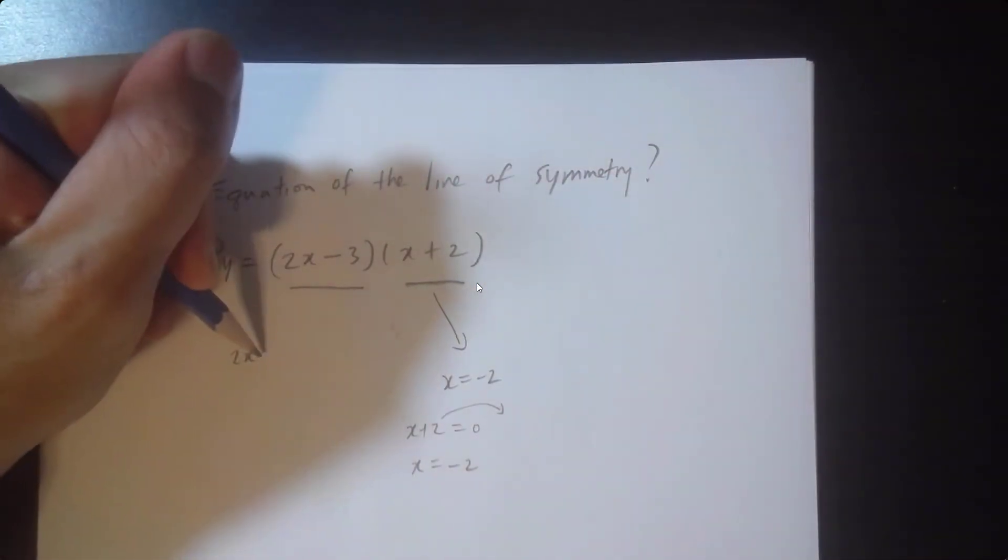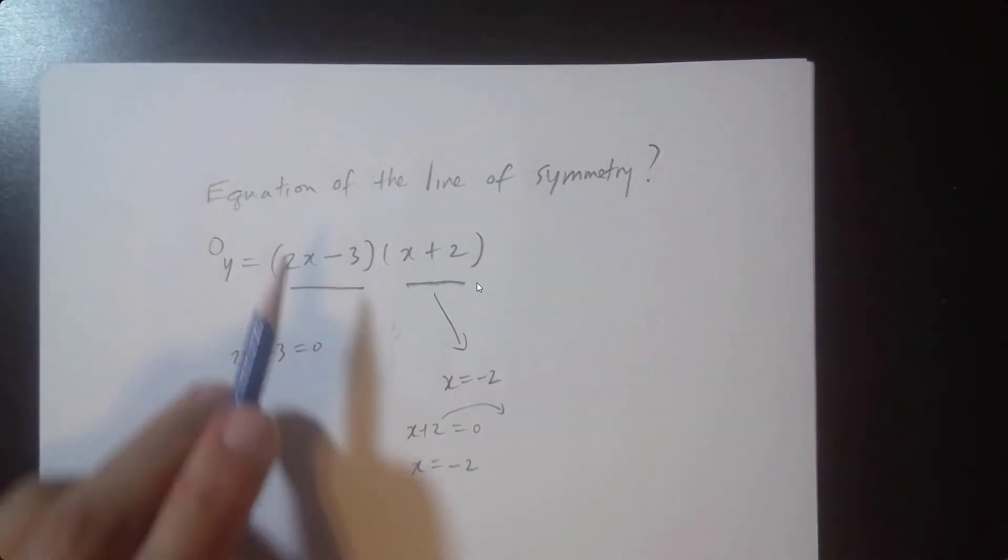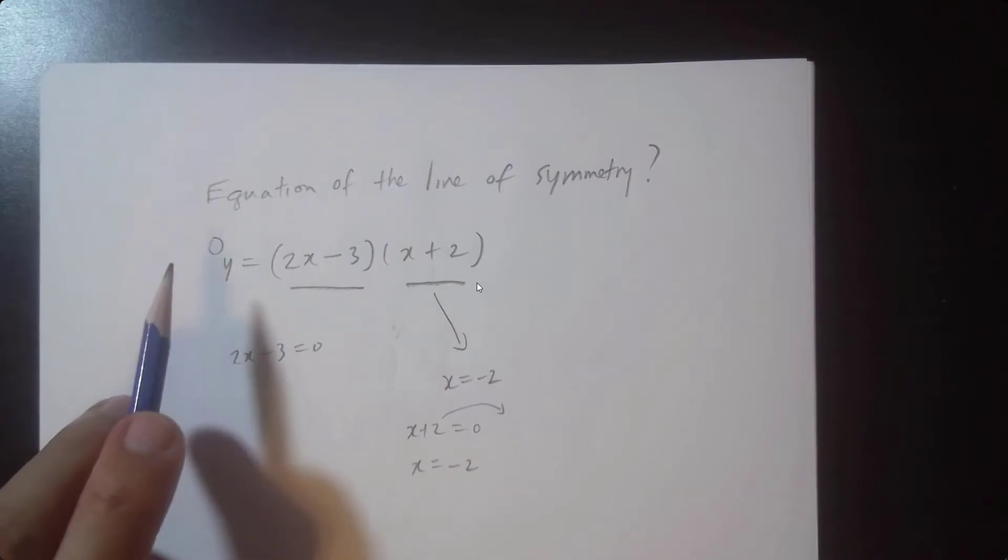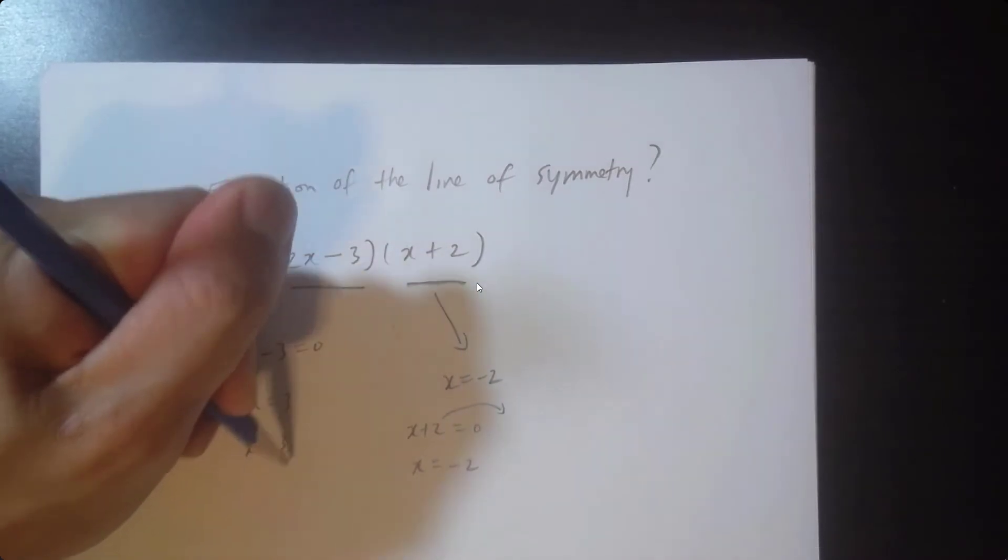Similarly, 2x minus 3 equals 0. This factor equals 0—0 times anything is 0—and this here is elementary algebra. You throw the negative 3 over, it switches sides, divide both sides by the coefficient, we get x equals 3 over 2.